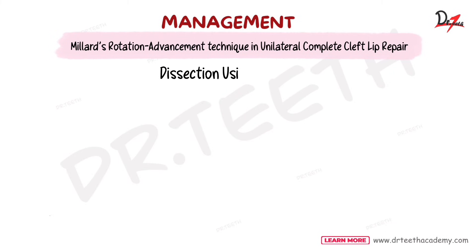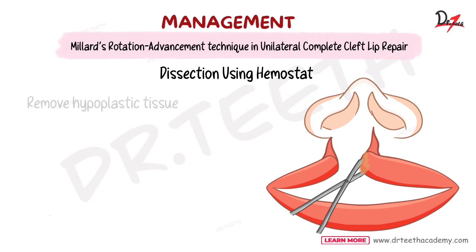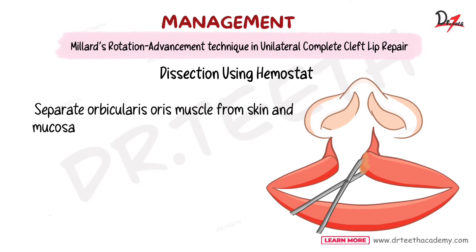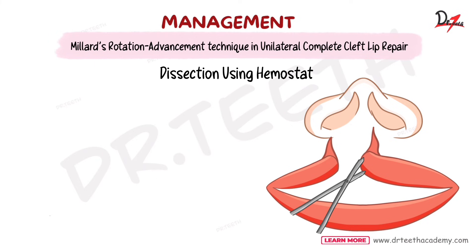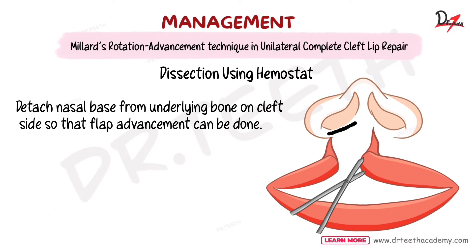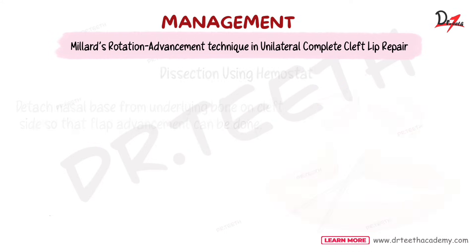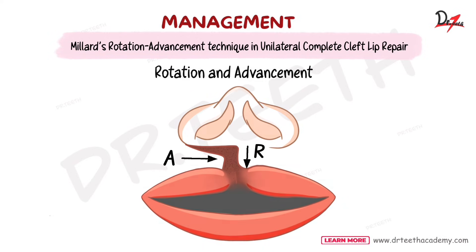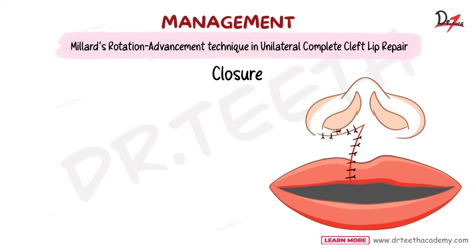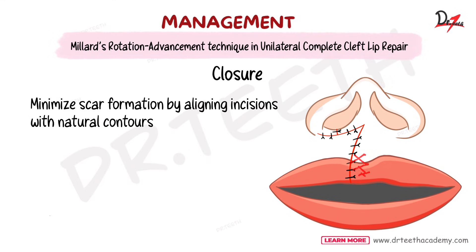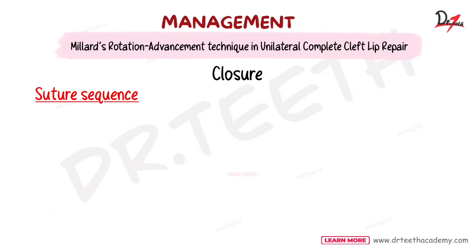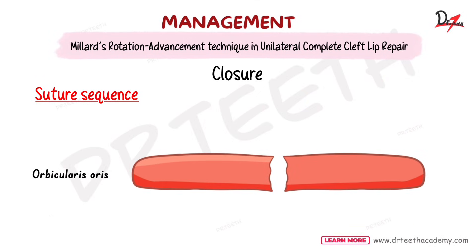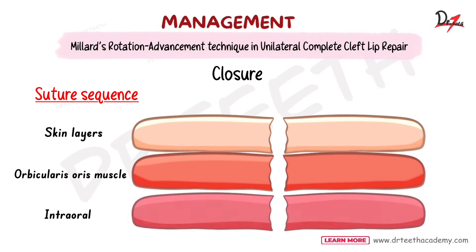A hemostat is used for dissection to separate the orbicularis oris muscle from the skin and mucosa. The nasal base is also detached from the underlying bone on the cleft side to allow flap advancement. Once incisions are complete, rotation and advancement bring the flaps together in the midline. Sutures are placed starting with the orbicularis oris muscle, followed by skin and then intraoral mucosa, minimizing scar formation by aligning incisions with natural contours.